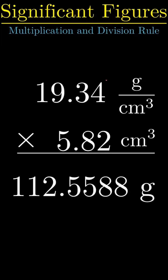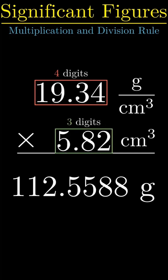Unlike addition and subtraction, we look at the digits in the numbers used. There are 4 in the density and 3 in the volume, yet the answer has 7 so some came out of nowhere.